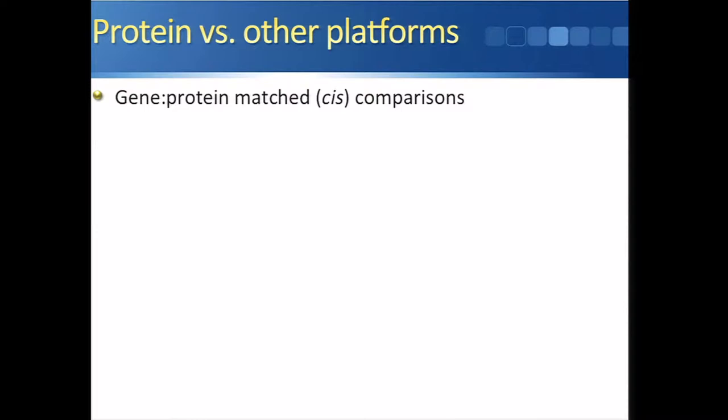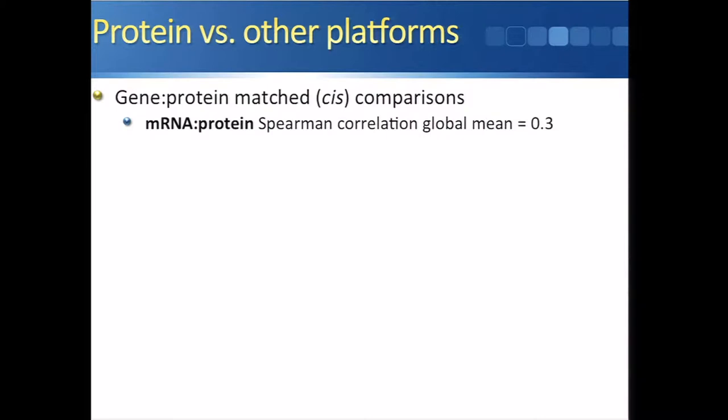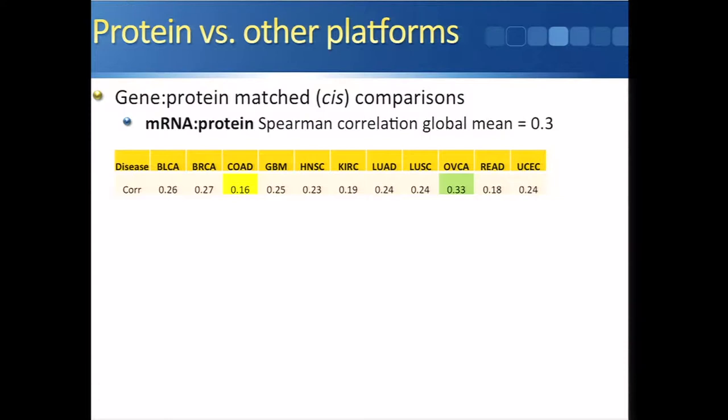After correcting for batch effects, we performed protein versus other platform comparisons. For mRNA versus protein matched comparisons, we found that on average the mRNA versus protein correlation was on the order of 0.3. That sounds a bit low, but this is common for patient samples. In cell lines we see much higher correlations — 0.7, 0.8 — but for patient samples, this is common.